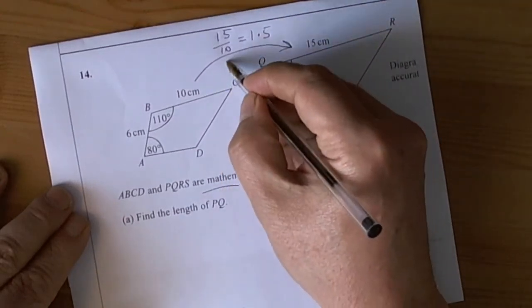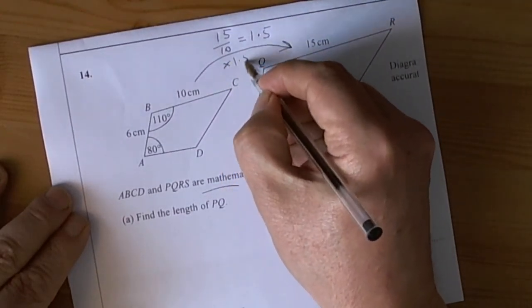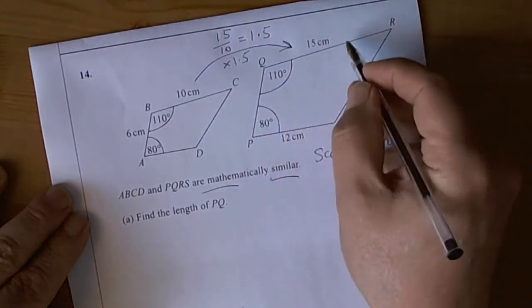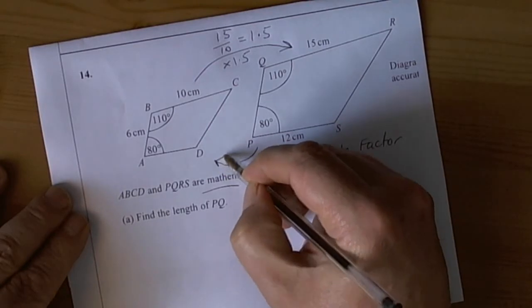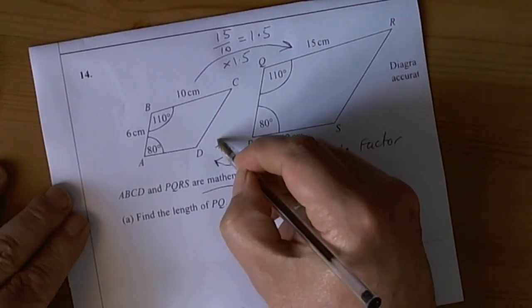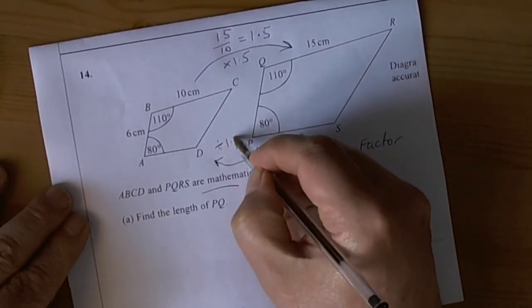That means we're going to multiply all the little side lengths by 1.5 to give us the big shape side lengths. If we go in the opposite direction, then we'll divide by the scale factor, so we'll divide by 1.5.